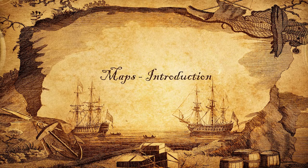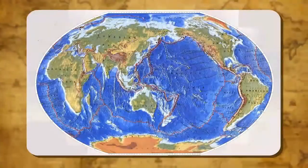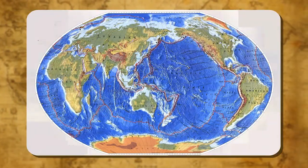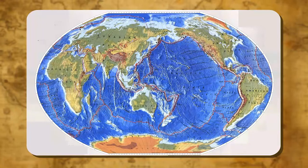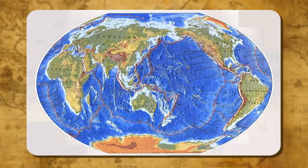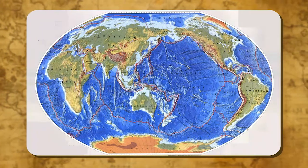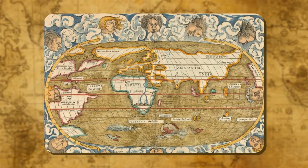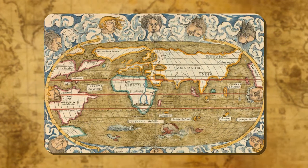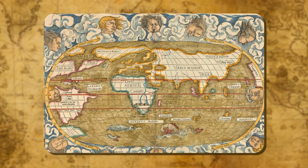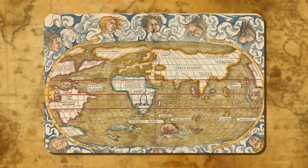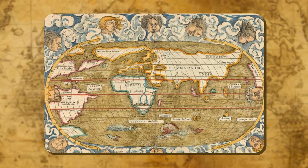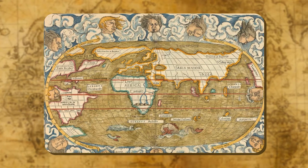Maps — Introduction. A map is a representation of the earth's surface or a part of it drawn on a flat surface. It is drawn to a scale. If we draw the world or a part of it on a piece of paper, that drawing is called a map. The details are given in the form of symbols, words, lines and colours.